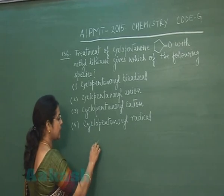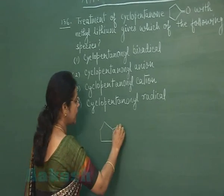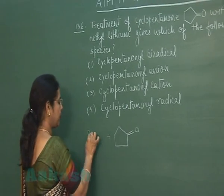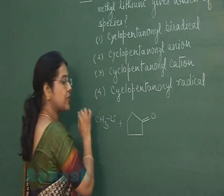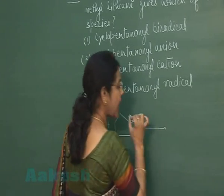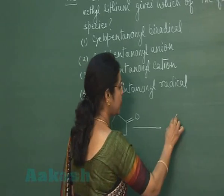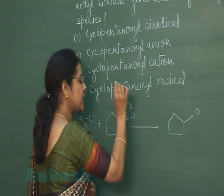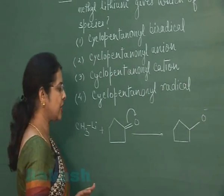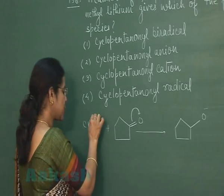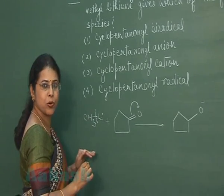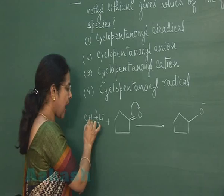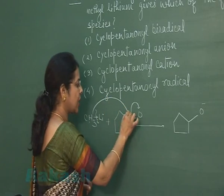The reactant given is cyclopentanone. The cyclopentanone reacts with methyl lithium. This methyl lithium is an organometallic compound. The reaction will take place at the carbonyl group. This is the carbon atom. The carbonyl bond breaks in this manner — oxygen acquires negative charge, and bond cleavage takes place from this position.